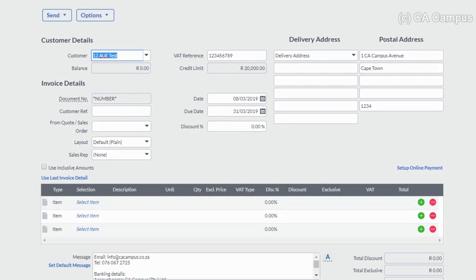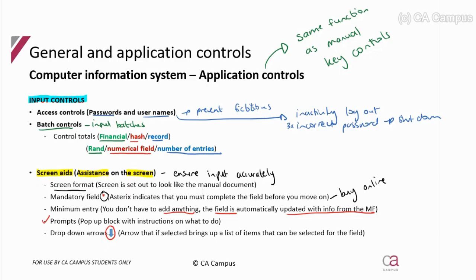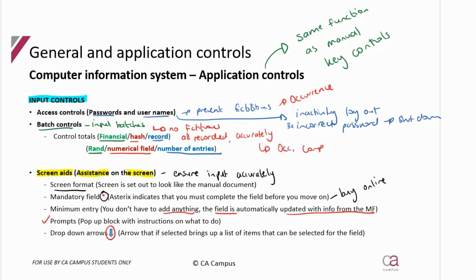So that covers minimum entry and drop-down arrows — and that is all the screen aids. Our input controls so far are nice and simple: username and passwords to prevent fictitious transactions, then batch controls to make sure we don't miss any records, there are no duplicate records, and the amounts are correct — that's why we look at different totals. These actually ensure all of those assertions: no fictitious entries, all are recorded, and they are accurately recorded — so occurrence, completeness, and accuracy.